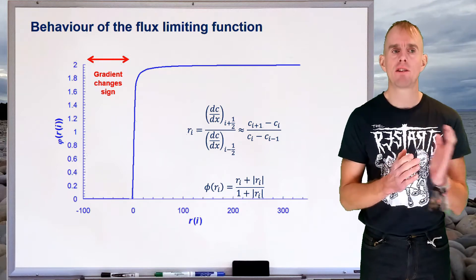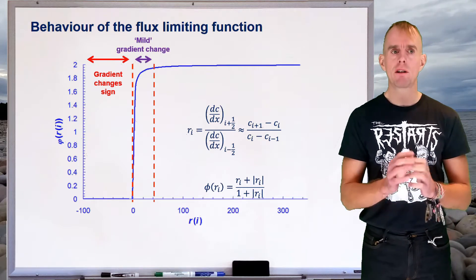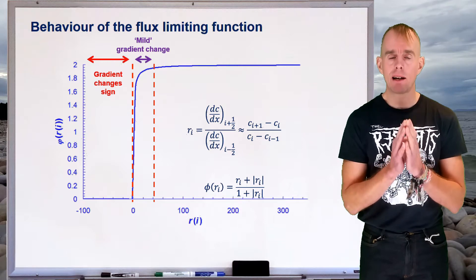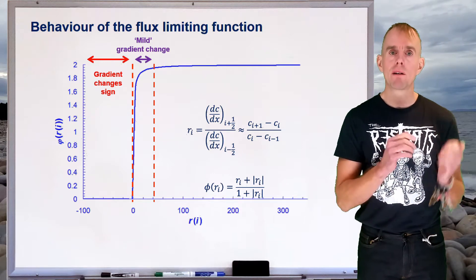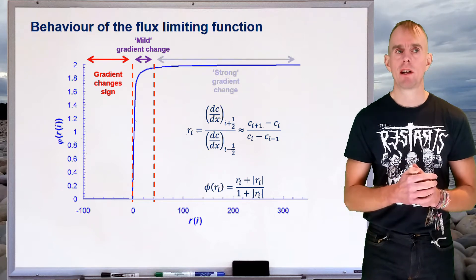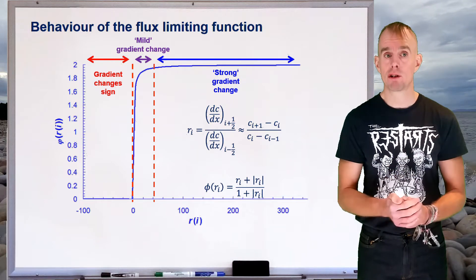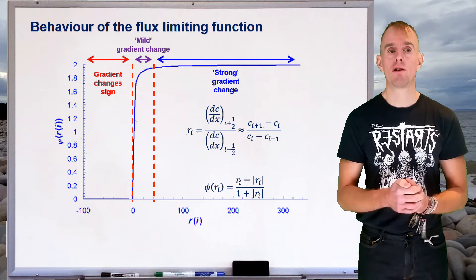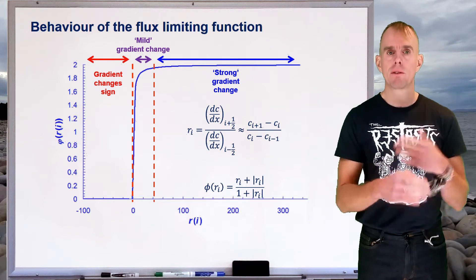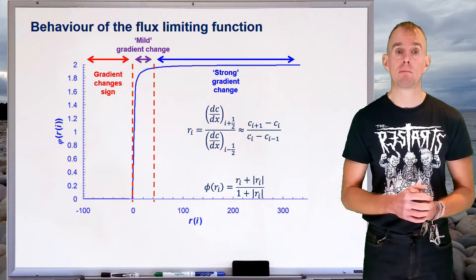Where our gradient changes sign, our flux limiting function equals zero — that is where the gradient sensor r is less than zero. Now if we've got a mild gradient change, it corresponds to a relatively small band of positive r, and the flux limiting function will vary smoothly between zero and two. If the gradient change is very, very strong, then r is going to be large, which results in an asymptotic solution — the flux limiting function stays at two. So according to the nature of the gradient in the problem, the flux limiting function changes adaptively, which is what gives this discretization method its power and utility.